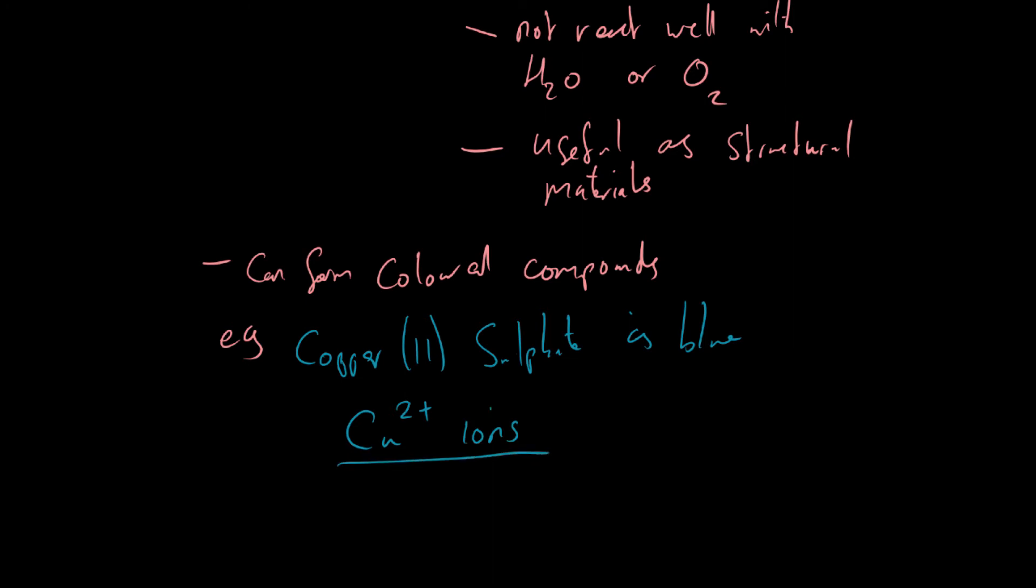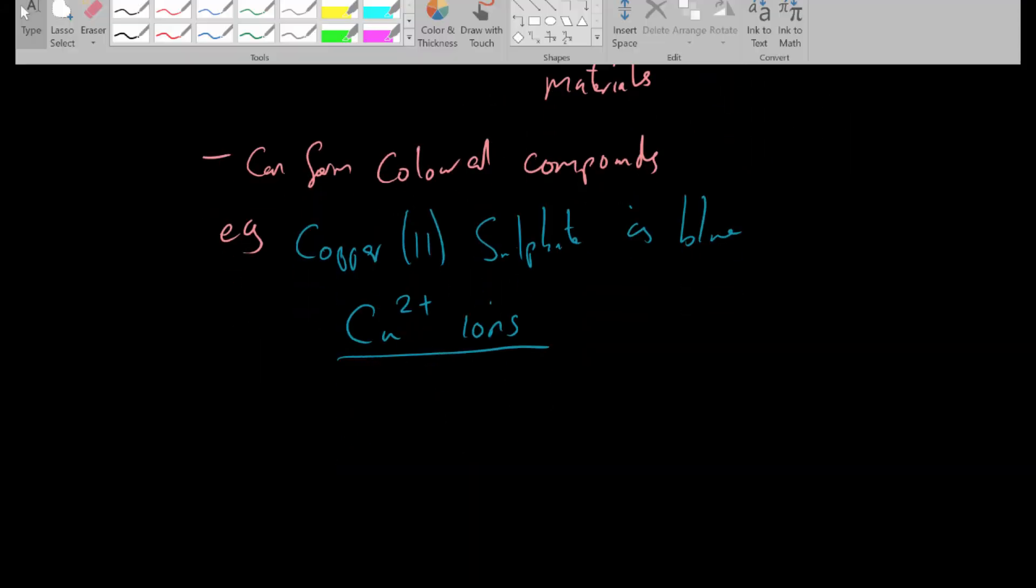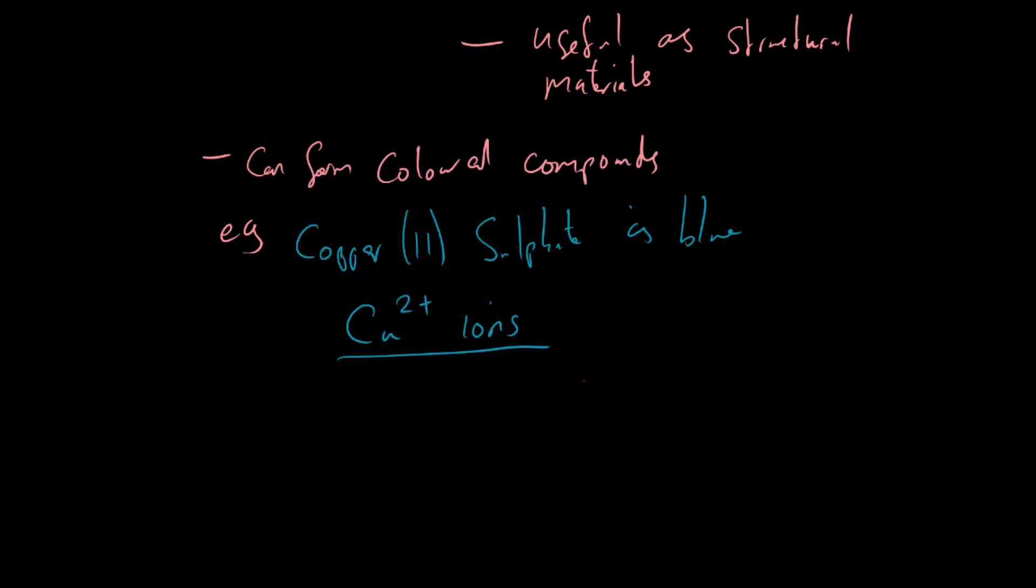Now you'll see that this charge here, the 2+, is represented by the roman numerals in these brackets. And that is pretty common. The reason you'll find these roman numerals written is because the transition metals can also form other ions. So this copper ion has a 1+ charge. Whereas this copper ion has a 2+ charge. Now that is very different to the other metals that you've studied so far.